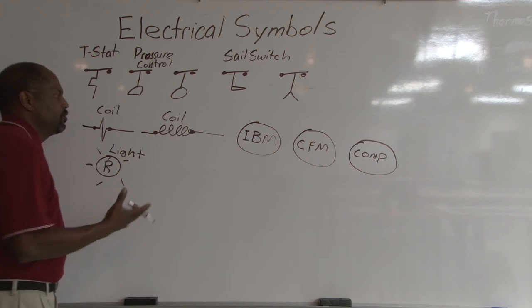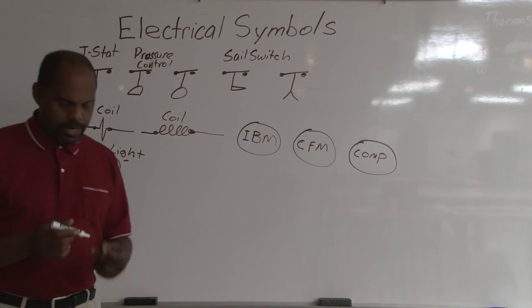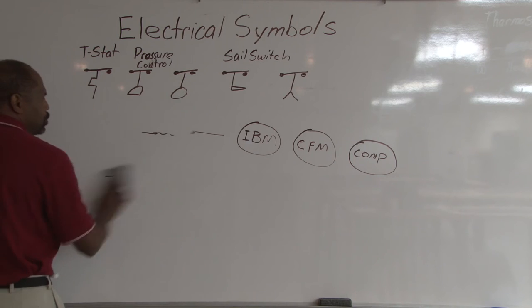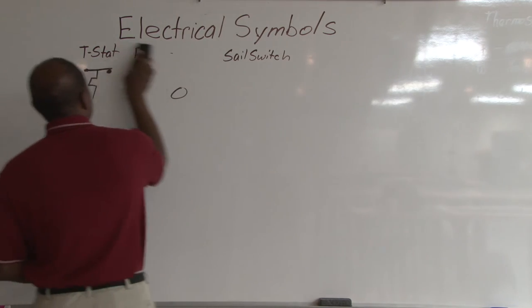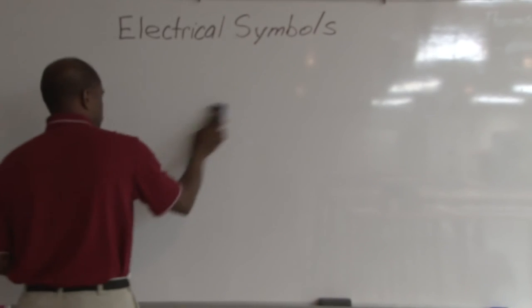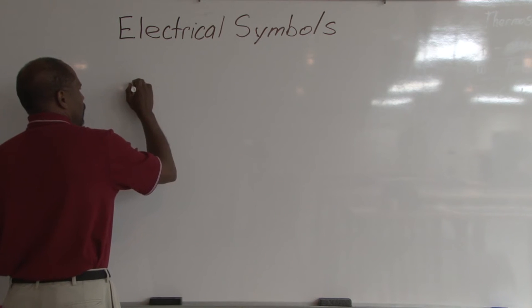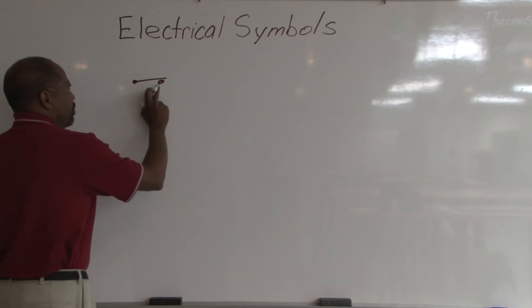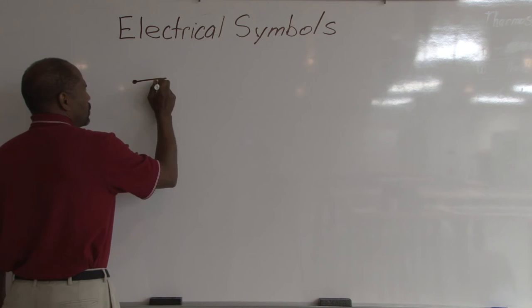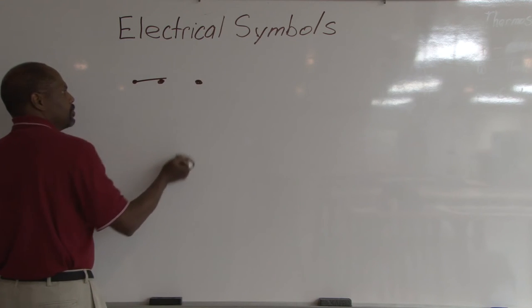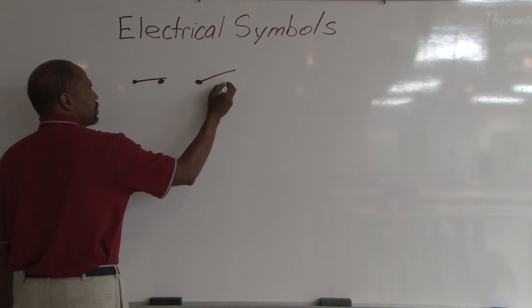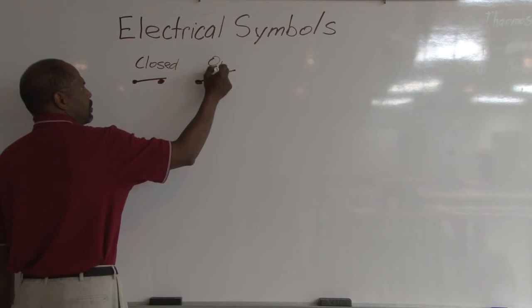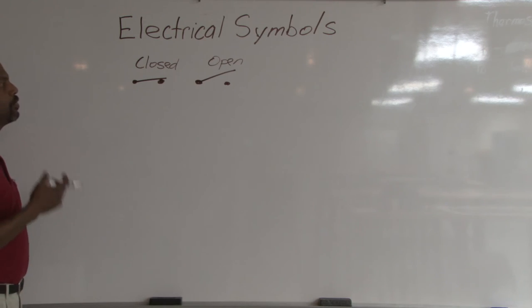Other types of switches that you'll find when we're dealing with switches for contactors or relays, we will show a symbol of a switch. A straight line, a gate basically, two contact points. Input, output. This is closed. An open switch will be drawn like this. This is closed. This is open. The same switch in two different positions.